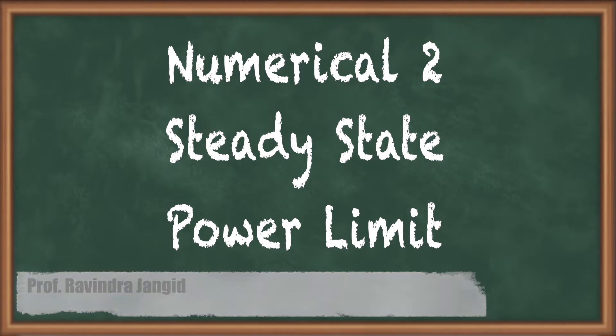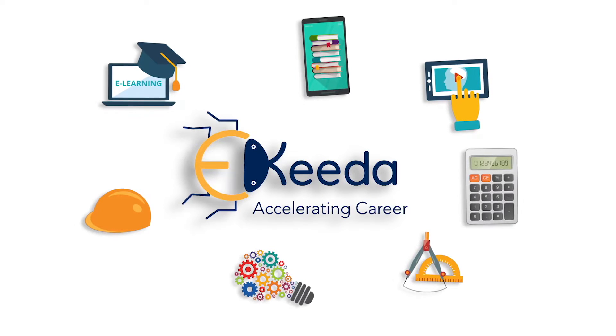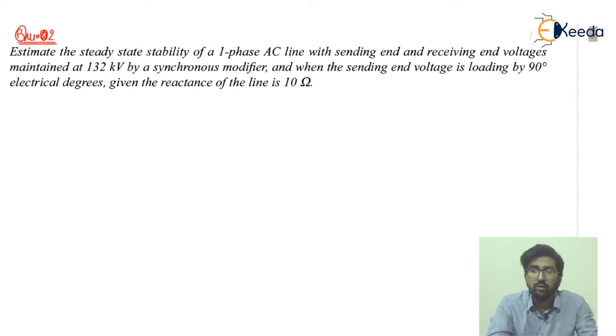Let's begin with reading the question. It is saying estimate the steady state stability of a single phase AC transmission system with a sending end voltage, where the generation has started, to the receiving end voltage, where the distribution can be done.